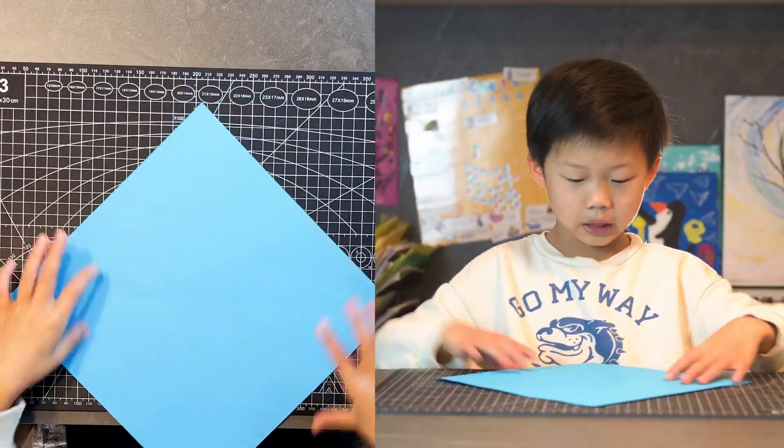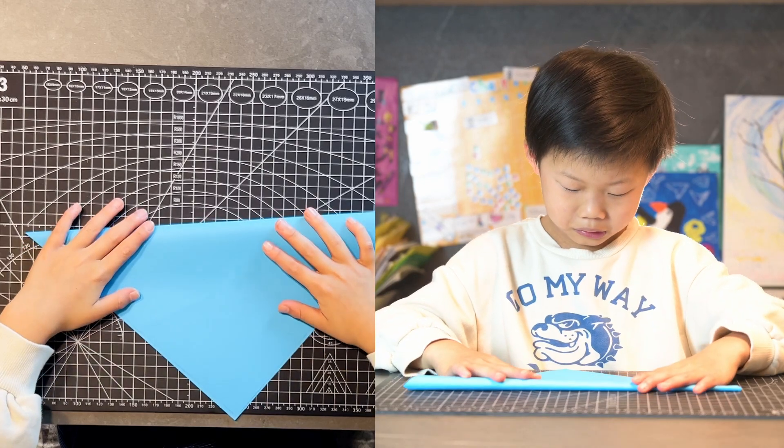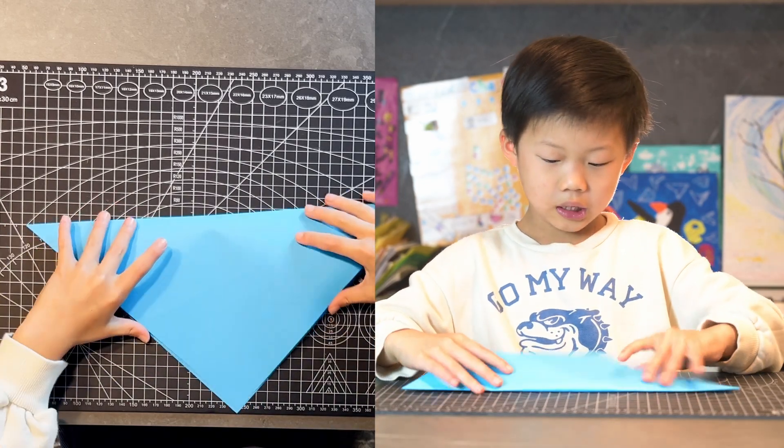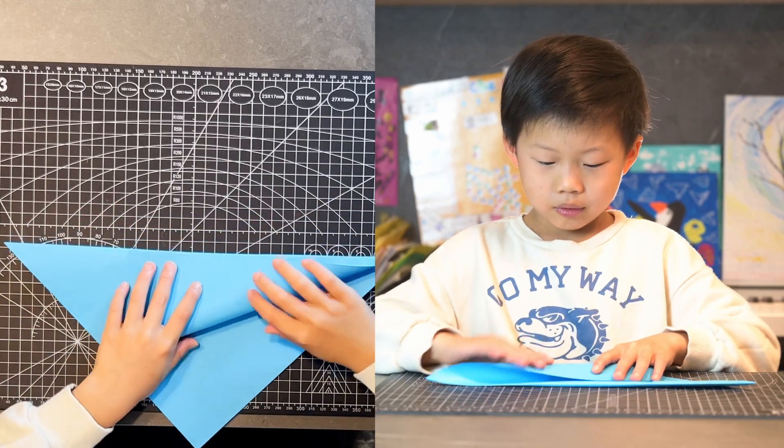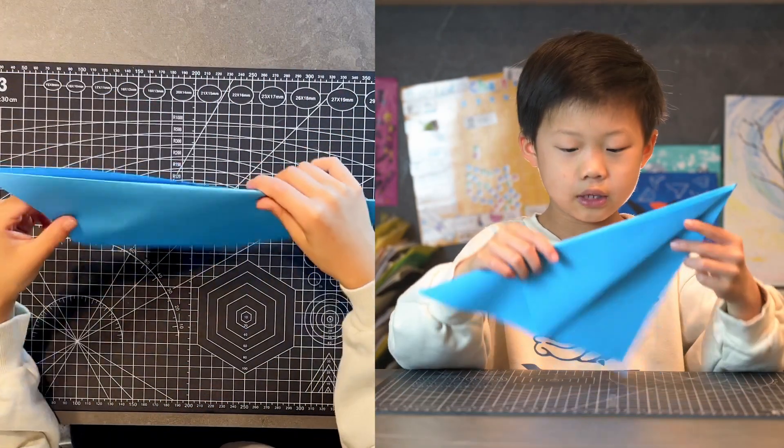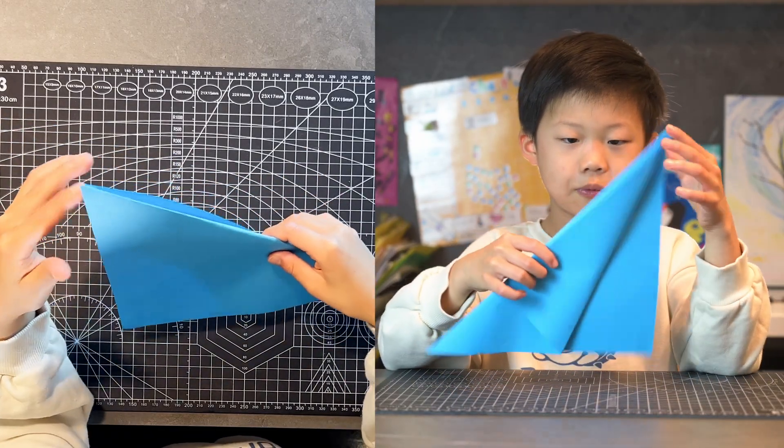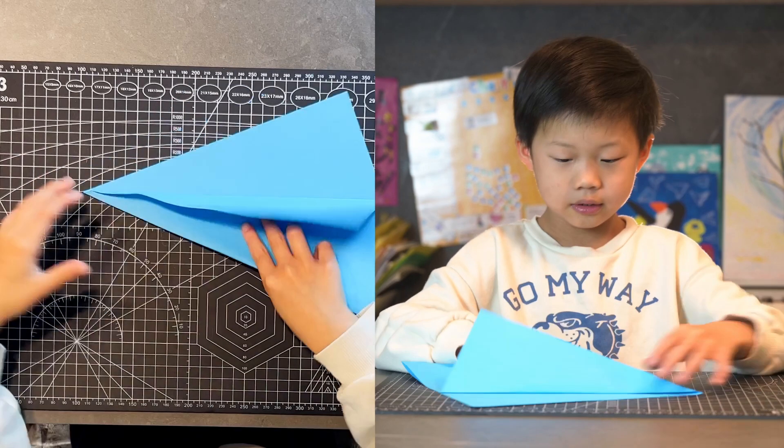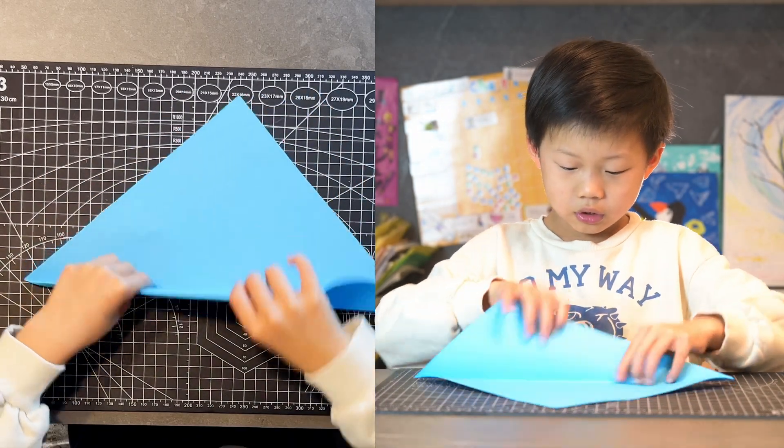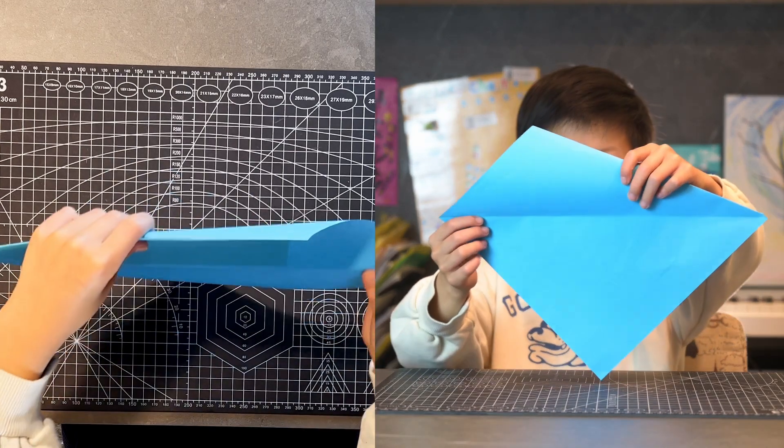So let's get folding. Hold your corner there and then fold like this. If you followed correctly you should have something like this: a right angle with a flap on it. And then open it up so you get this weird shape.